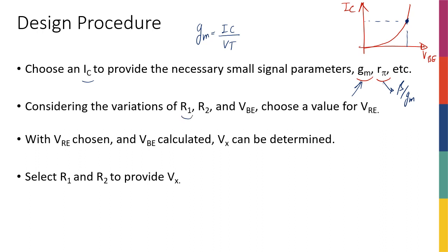The next thing is, considering the variations in R1, R2, and VBE, we're going to choose a value for VRE. As we said, the bigger VRE is, the less sensitive you're going to be to variations in the resistor values, which result in variations in the base-emitter voltage. So generally we want VRE on the order of 100 to 200 millivolts — whatever we can actually afford.